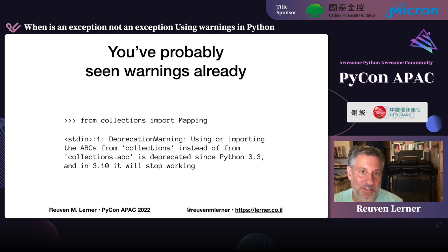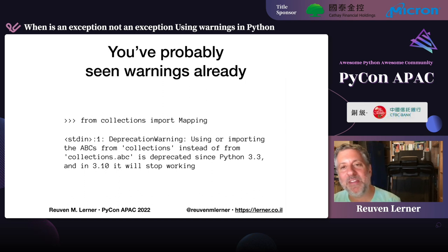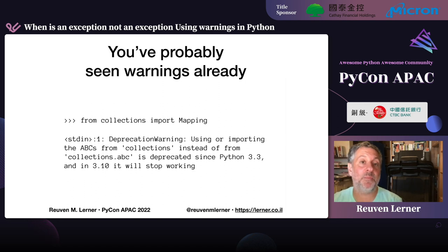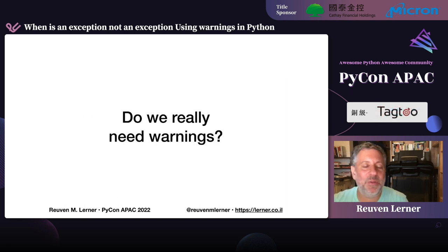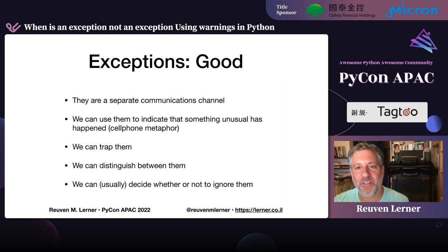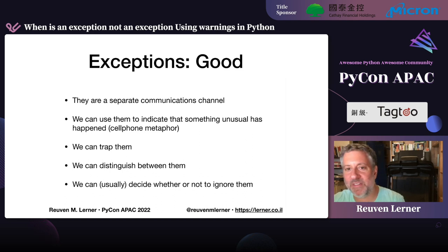If you don't listen to all those warnings, bad things will happen. But the assumption is that if the warnings happen often enough, then you will at some point change your ways and things won't go catastrophically wrong. Now, do we really need warnings? The answer is, of course, yes and no. We could use exceptions — exceptions already exist in Python and we use them all the time.